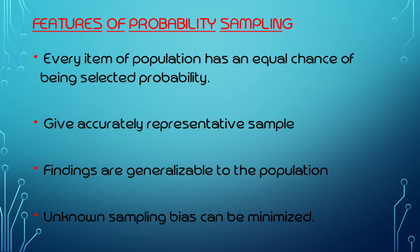Every item of the population has an equal chance of being selected. This is the feature of probability sampling. It gives accurately representative samples.